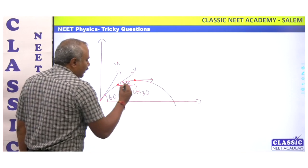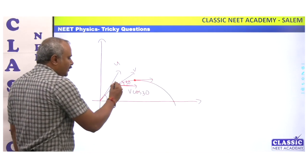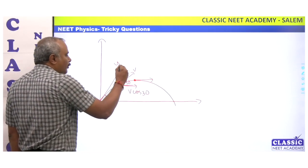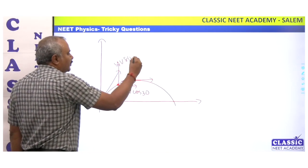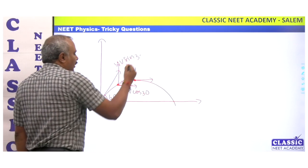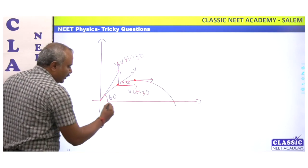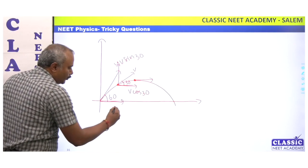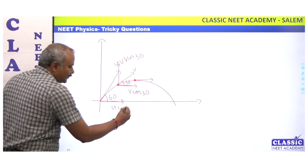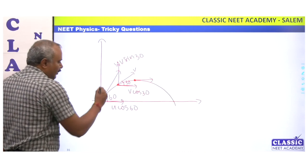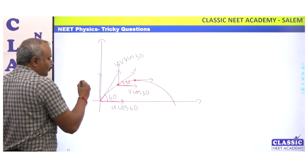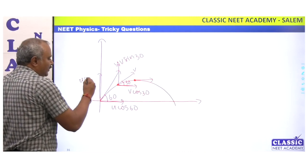At the point where the velocity makes 30 degrees, the horizontal component is V cos 30 and the vertical component is V sin 30. The initial horizontal component is U cos 60 and the initial vertical component is U sin 60.